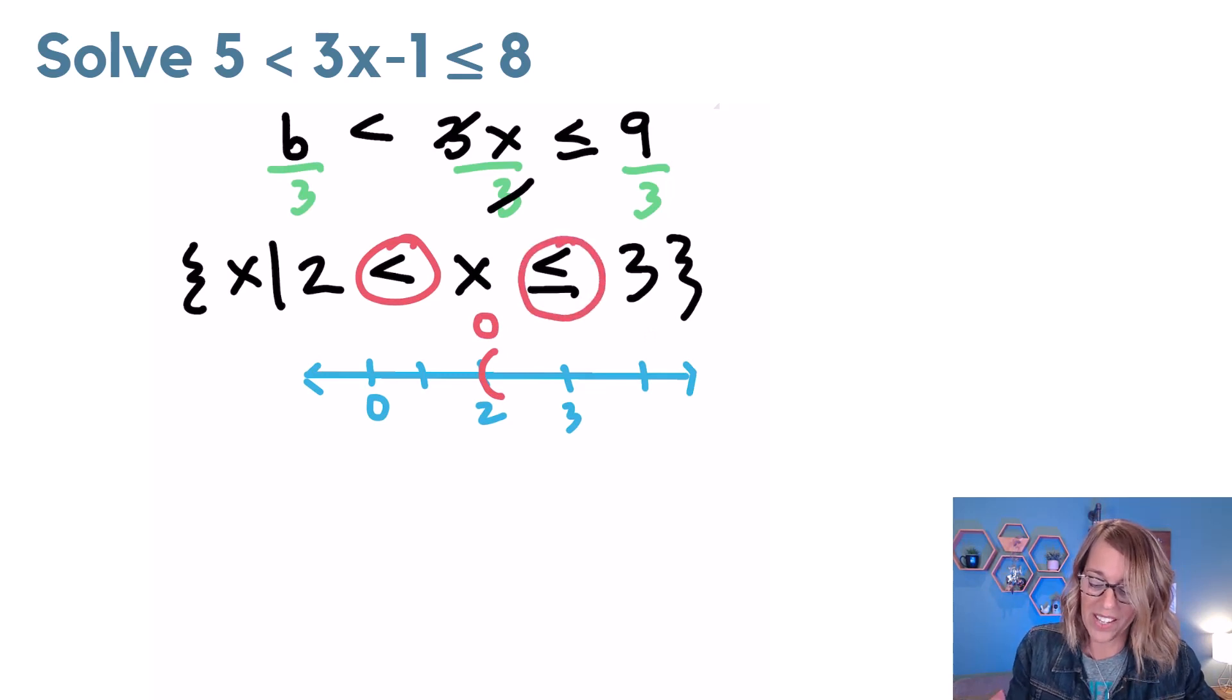At 3, because it's less than or equal to, it is included. So I want a square bracket. Or you could do a closed circle. Everything in between.